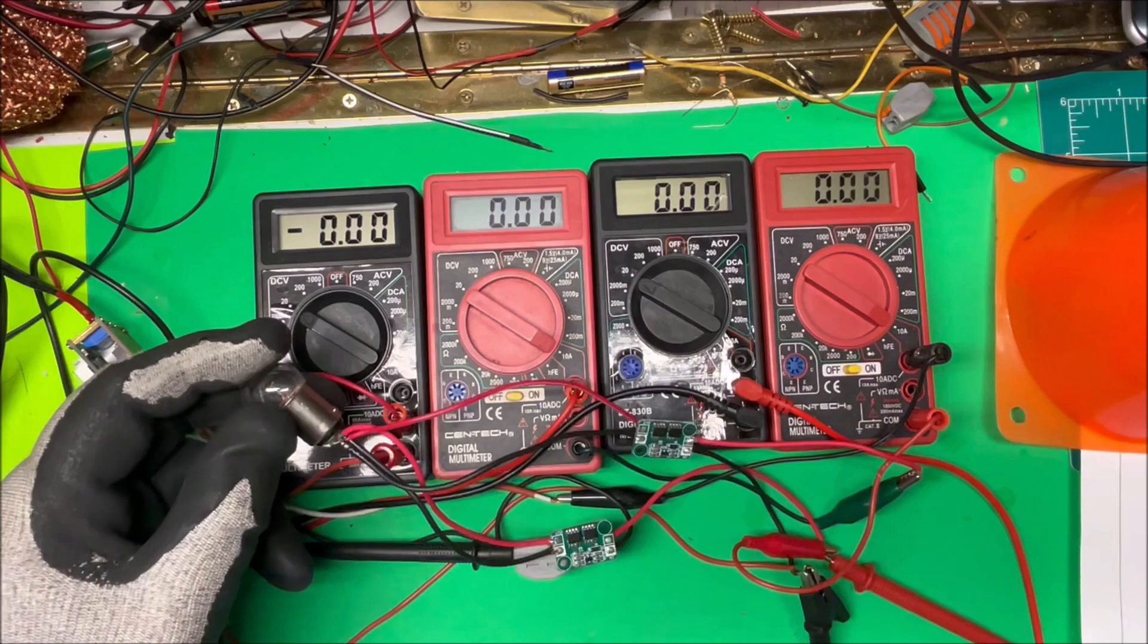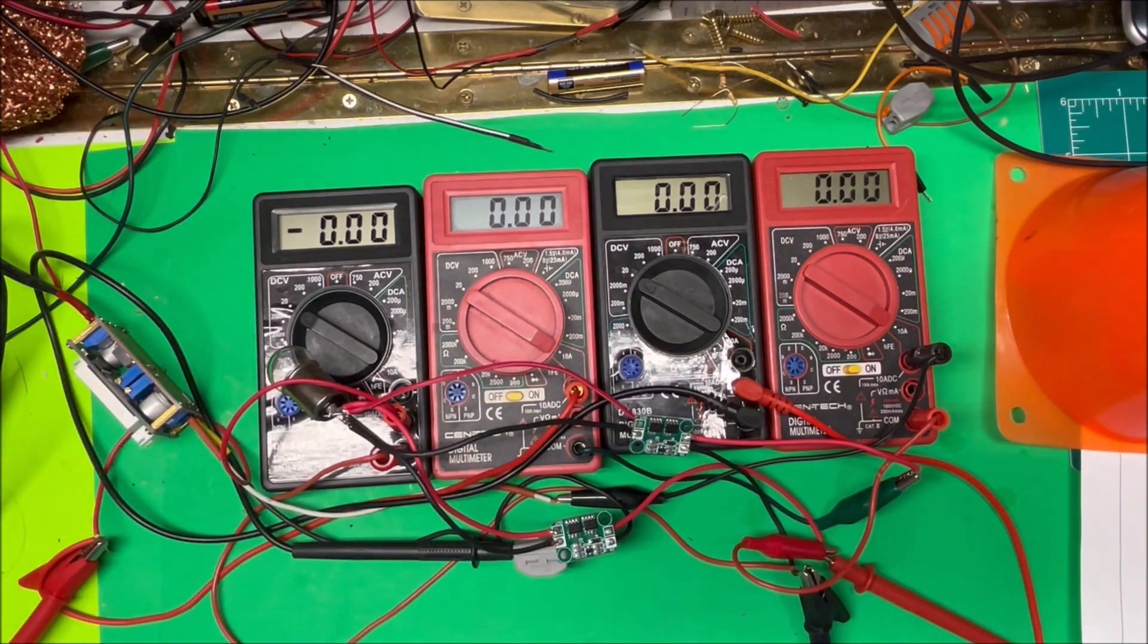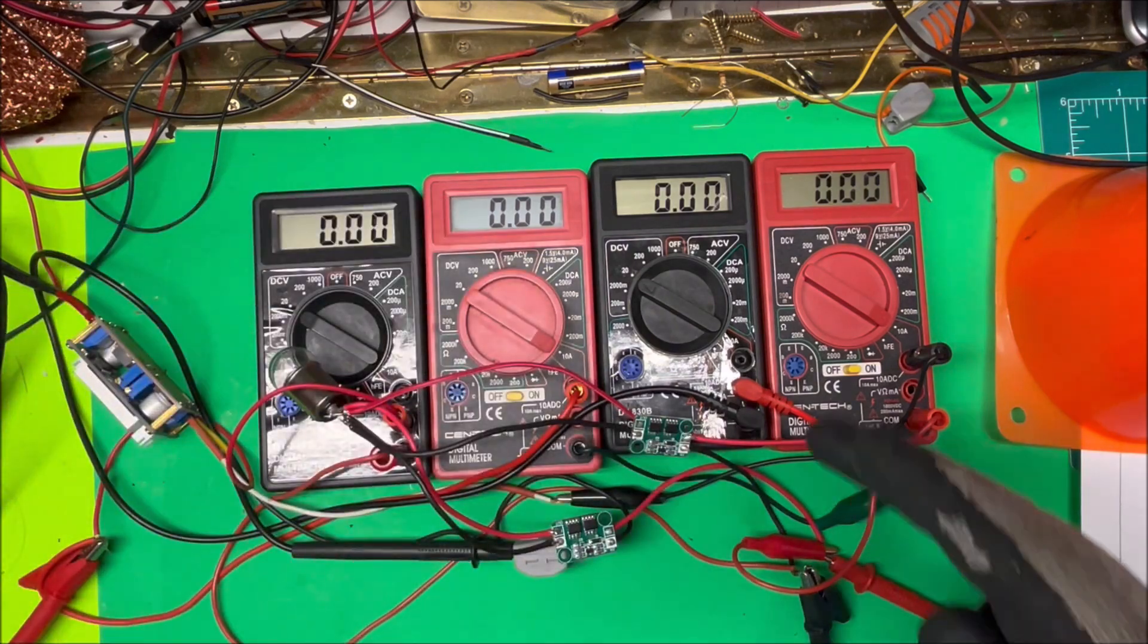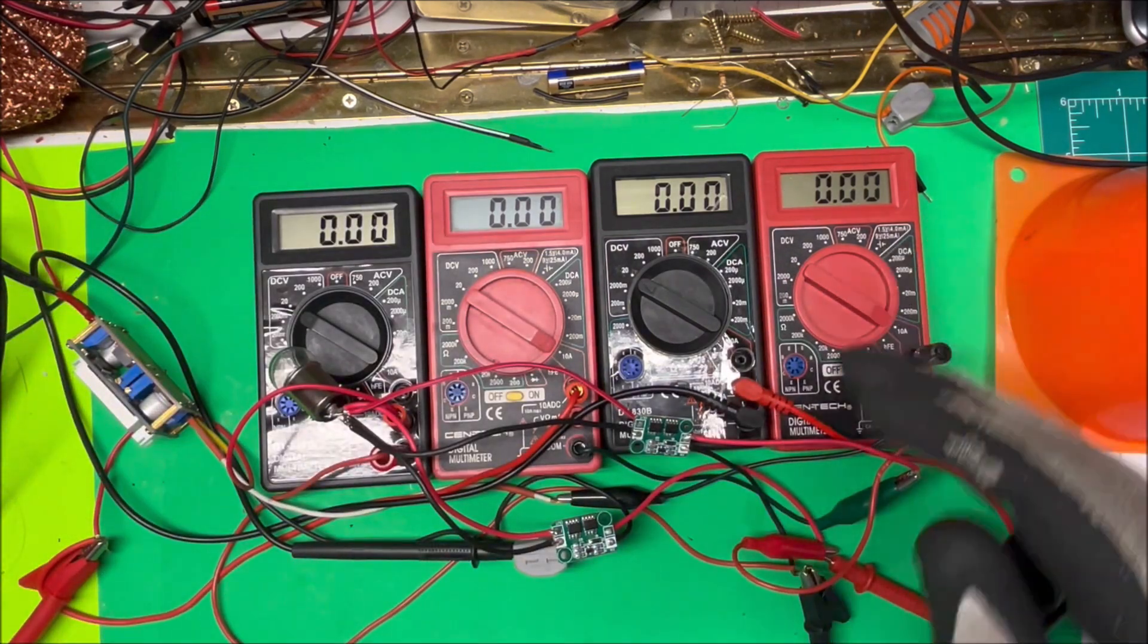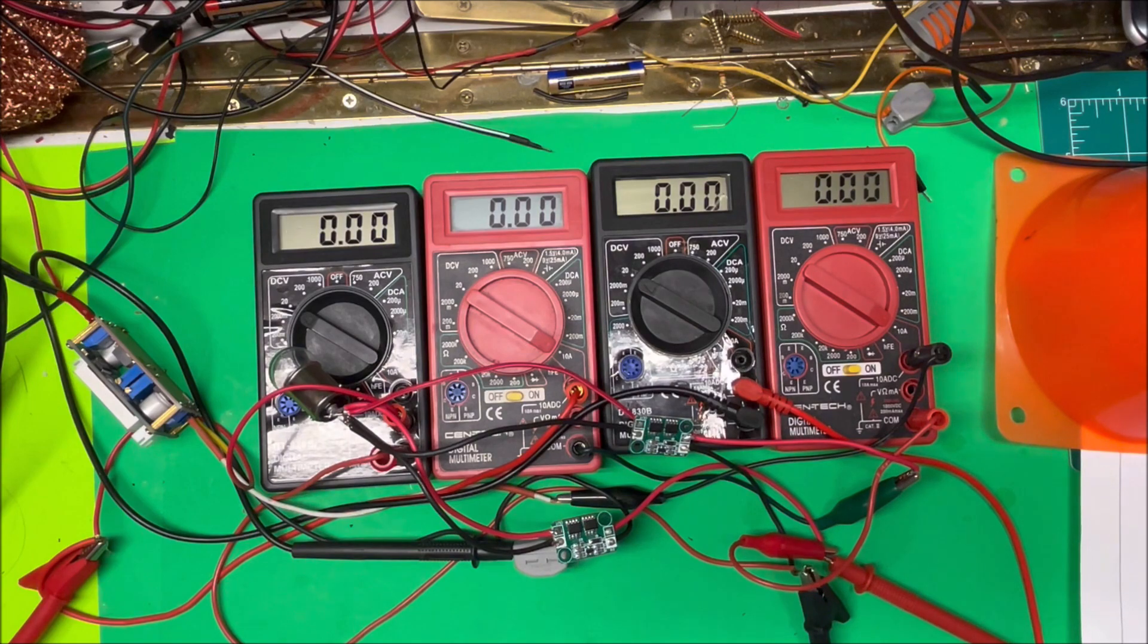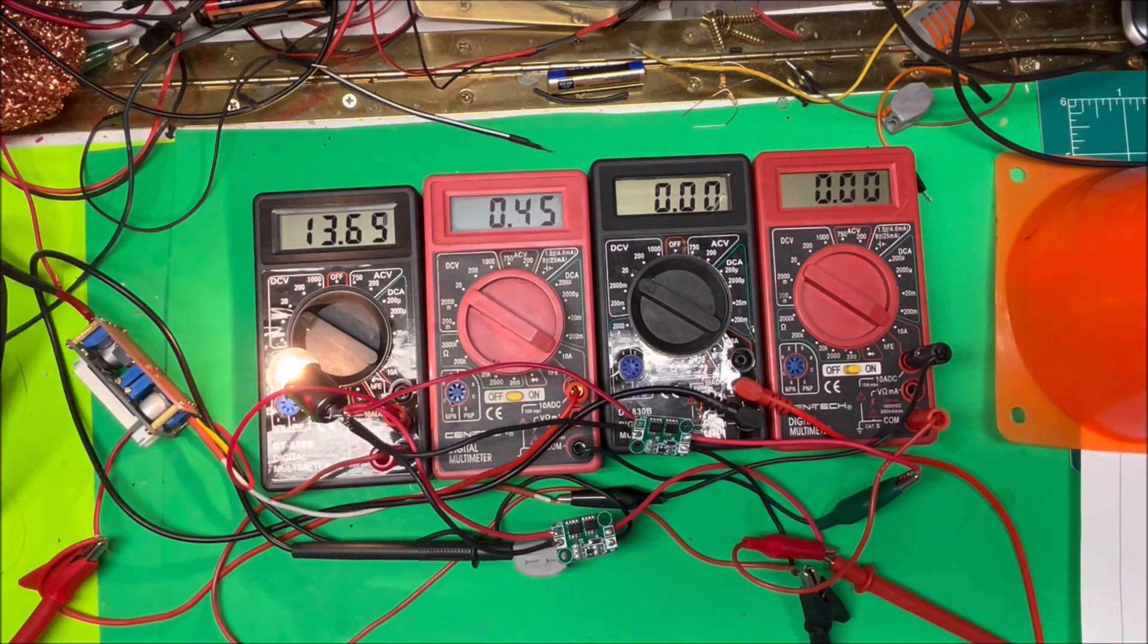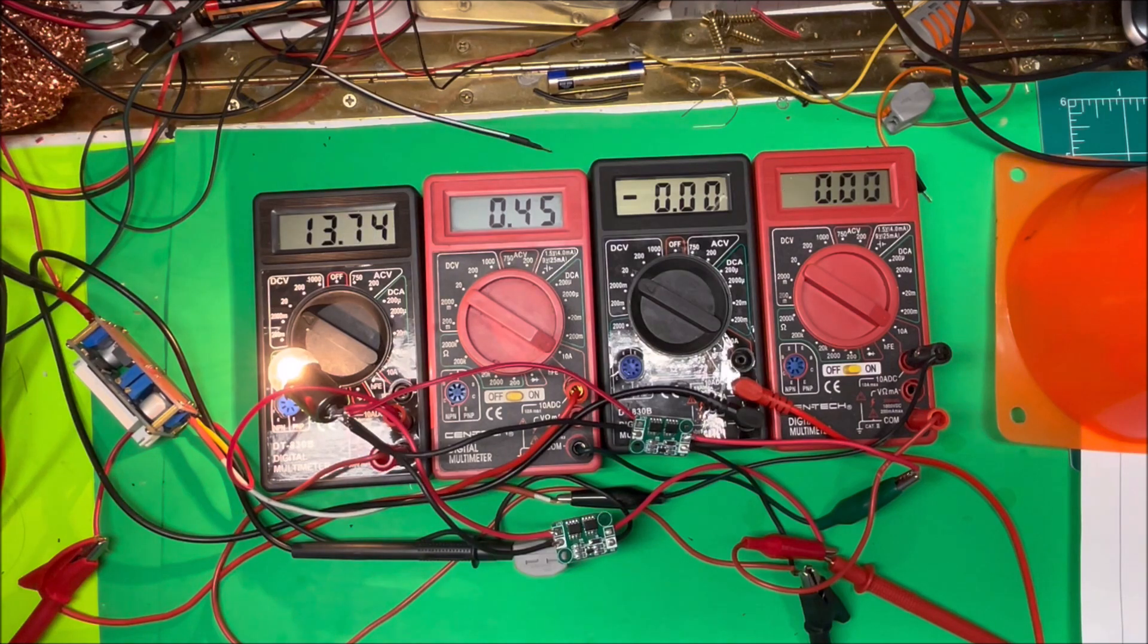This is the voltage to the first diode, this is the current to the first diode, and this is the voltage to the second diode and the current to the second diode over here. So I'm going to turn this one on and we've got 13, let's put it at 12 volts.